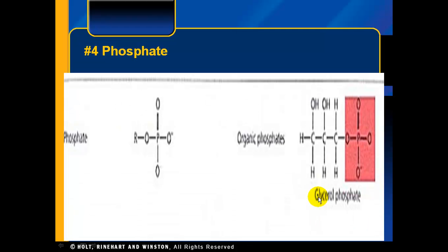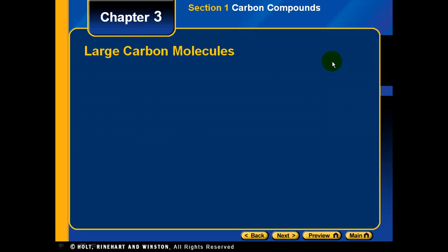The last functional group is the phosphate group, which is easy to recognize because it contains phosphorus surrounded by a number of oxygens. The name is phosphate, and it belongs to the group called organic phosphates. As with the others, the R group varies depending on the molecule. Those are your four functional groups.